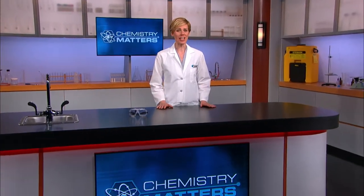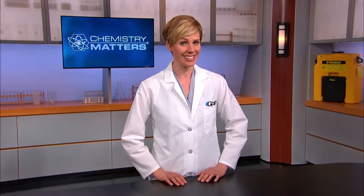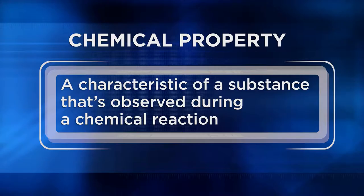Welcome back to Chemistry Matters as we continue with Unit 2 and our introduction to matter. We're going to move from the physical properties of substances to exploring their chemical properties. A chemical property is a characteristic of a substance that's observed during a chemical reaction. While elements alone are wonderful, it's the reactions of these elements with each other that make life possible. Most matter exists as mixtures or combinations of elements. Rarely do you find elements in nature that haven't combined with other elements. What I'm describing now are chemical changes.